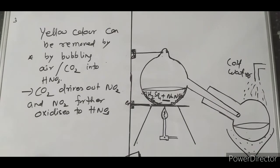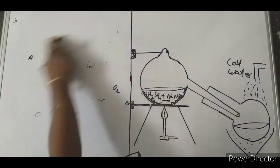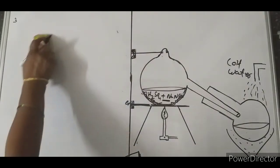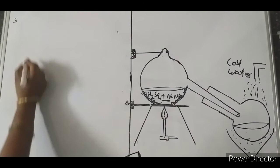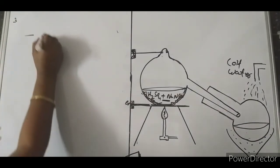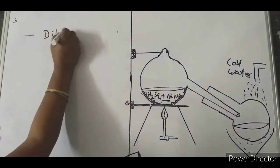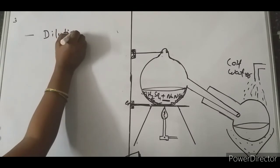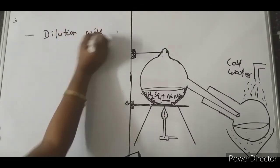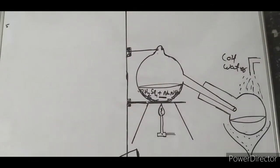The second method to remove the yellow color is by dilution with water.